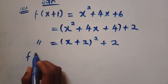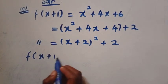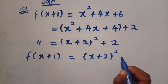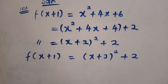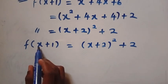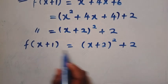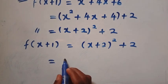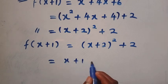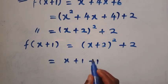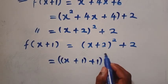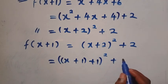Now we have f of x plus 1 equals x plus 2 raised to the power of 2, then plus 2. So next, we have here as x plus 1, and here is x plus 2. If I rewrite this side as x plus 1 plus 1, x plus 1 plus 1, then I bracket this, all raised to the power of 2, then plus 2.